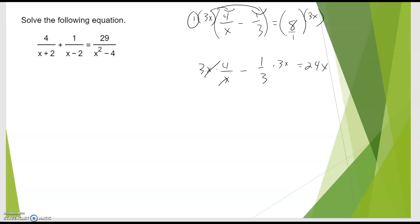3x times 4 over x minus 1 third times 3 over x equals 24x. And like I said, this will always happen. The denominators given will divide into your least common denominator. And then you'll just get, in this case, 3 times 4 minus 1 times x equals 24x. 12 minus x equals 24x. And I get a solution. You want to check that. You can plug it back in and make sure it works. Because we do have to be careful with the domain issues here.